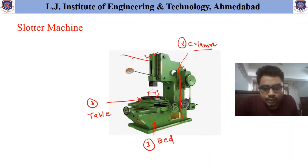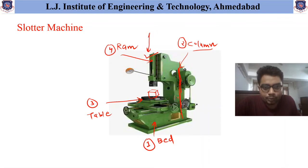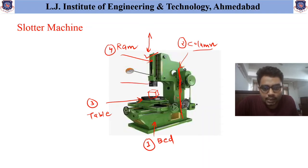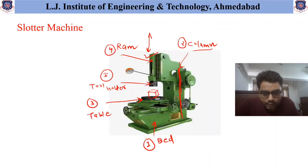The next important part, the fourth one, is called the ram. This ram is used to obtain reciprocating movement of the tool. The fifth part is called the tool holder, and this tool holder is used to hold and support the tool, which is available in this tool holder.